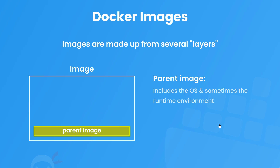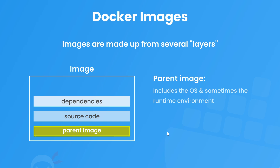This parent image layer is itself a Docker image already pre-made, so we're just creating a new image on top of that. The initial layer is normally a parent image which typically includes a lightweight operating system and a runtime environment. The next layers that we build on top of that can be anything else we'd add to our image, such as copying source code to the image, installing dependencies, or specifying any initial scripts that need to run.